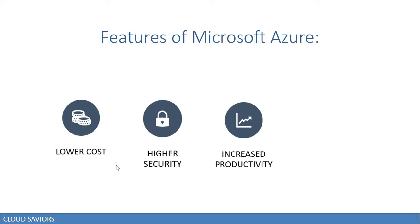The next feature is increased productivity. If you have decided to move to the cloud, your productivity will increase. For example, if you are a manufacturing, travel, or insurance company, your core business is not IT. If you manage your own on-premises data center, you must dedicate an entire team to IT operations, which distracts from your core business.